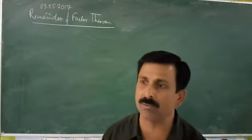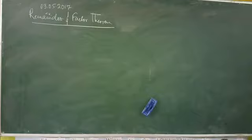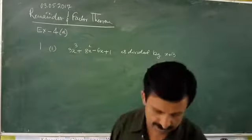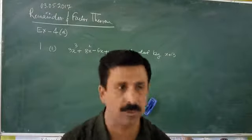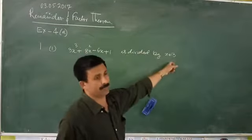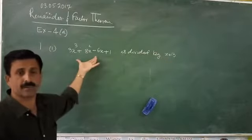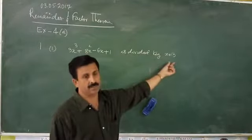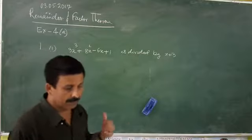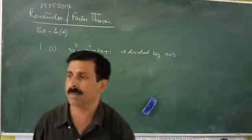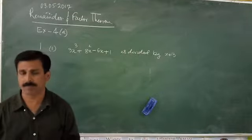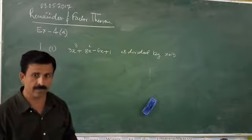Whatever I have said, if you have any confusion — when I do it on the board it will be clearer. The question says: find the remainder when this expression is divided by x plus 3. We can do this in two different ways, and I am going to show you both methods.